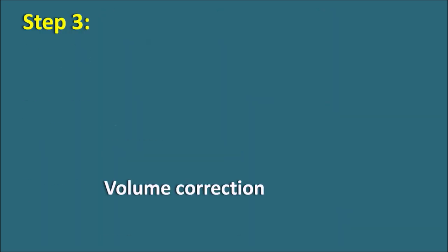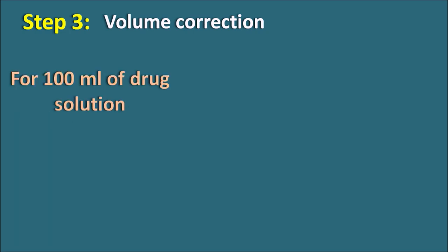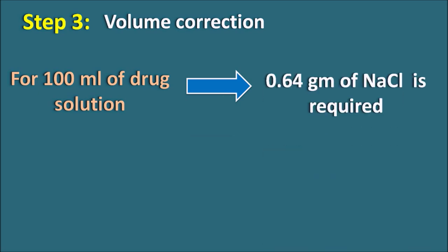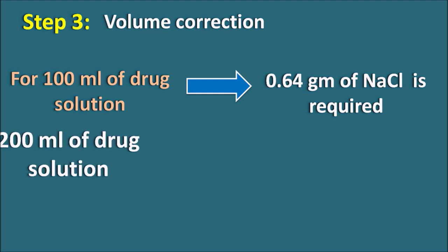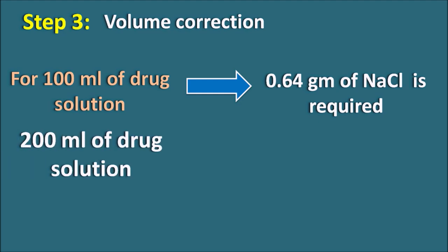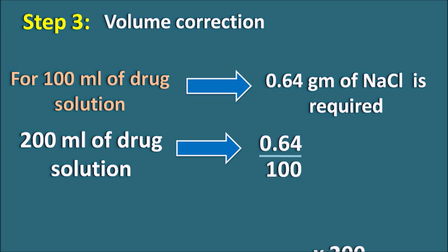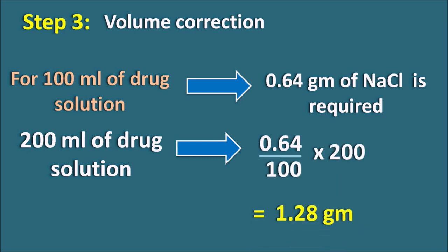Step 3: Volume correction. For 100 ml of the drug solution, we already calculated that 0.64 grams of sodium chloride is required. But the actual volume of the sample is 200 ml. So for 200 ml of the drug solution, the amount needed = (0.64 / 100) × 200 = 1.28 grams. Therefore, 1.28 grams of sodium chloride must be added to produce the isotonic solution.